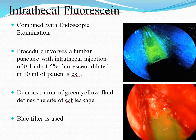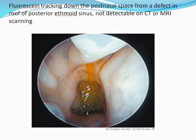Intrathecal fluorescein combined with endoscopic examination: this procedure involves a lumbar puncture with intrathecal injection of 0.1 ml of 5% fluorescein diluted in 10 ml of the patient's CSF. Demonstration of the green-yellow fluid defines the site of the CSF leak; a blue filter is used. Fluorescein tracking down the post-nasal space from a defect in the roof of the posterior ethmoid sinus can be visualized.